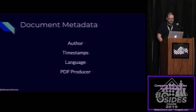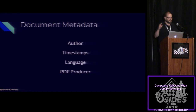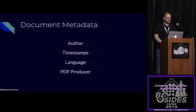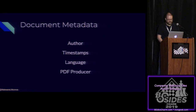Document metadata — as we saw earlier — some of it is very important. The most important are author and PDF producer (same thing in different formats), timestamps, and language. These can all be used to relate files and find new ones related to ones you already have.